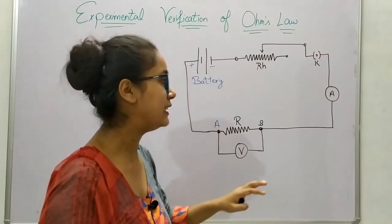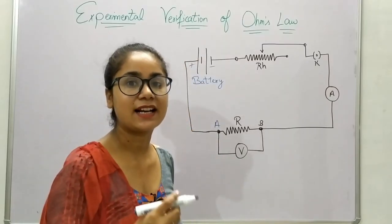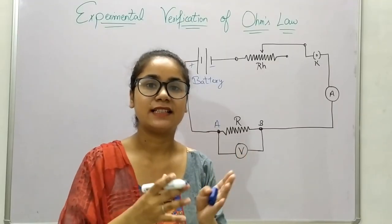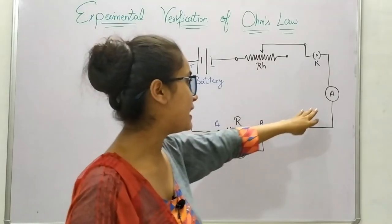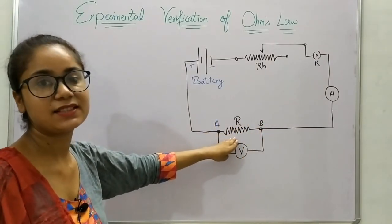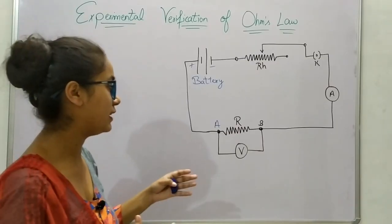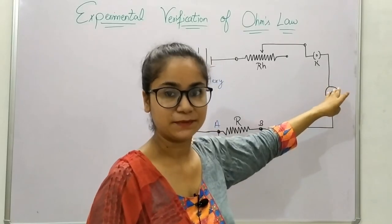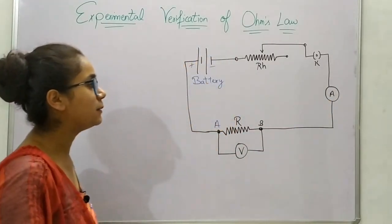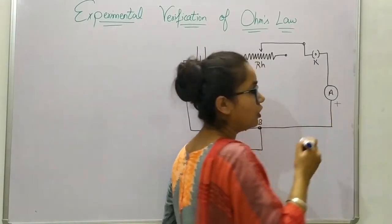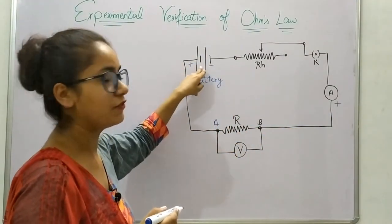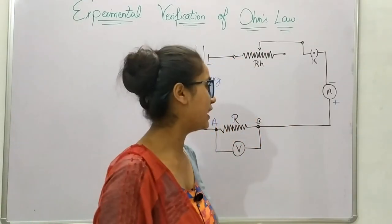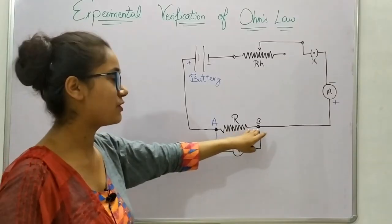Note that the 'AB' symbol here denotes a resistance wire, while the 'A' symbol denotes the ammeter connected to our electric circuit. The ammeter measures the electric current flowing in the circuit. The ammeter is kept in series with the resistance so that the current flowing through the resistance is the same as the current flowing through the ammeter. The positive terminal of the ammeter is connected to the negative terminal of the battery.